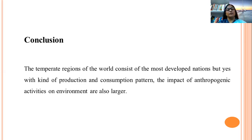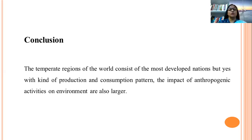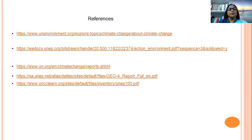In fact, temperate regions of the world consist of the most important nations, but the impact of their production and consumption patterns and anthropogenic activities on the environment is much, much larger. Although the entire world is talking about various treaties and protocols at local, regional, and global levels, the world is still struggling to cope with environmental issues. Some important references, including various UN and UNEP reports, are provided here for those who would like to explore further the environmental problems of the temperate region.